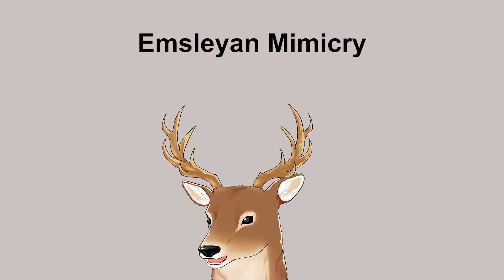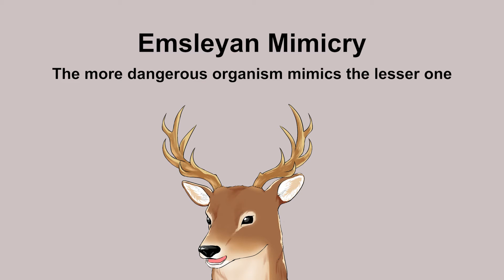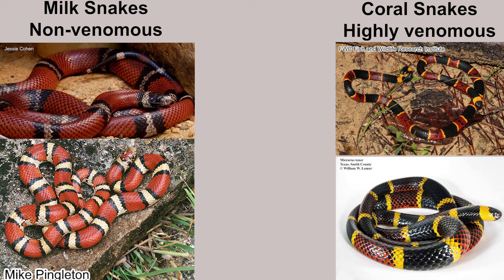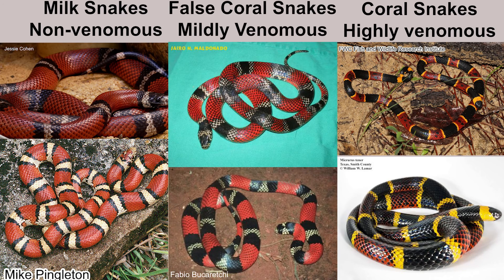Let's talk about Emslian mimicry. There is a mimicry complex of coral snakes and milk snakes with similar coloration and patterns. The milk snakes are harmless while the coral snakes are highly venomous. So logically, milk snakes do Batesian mimicry to the coral snakes, while coral snakes do Müllerian mimicry to each other. There is another participant: the false coral snake, which is not that dangerous but still venomous. By this logic, the false coral snakes would also do Batesian mimicry to the coral snakes.